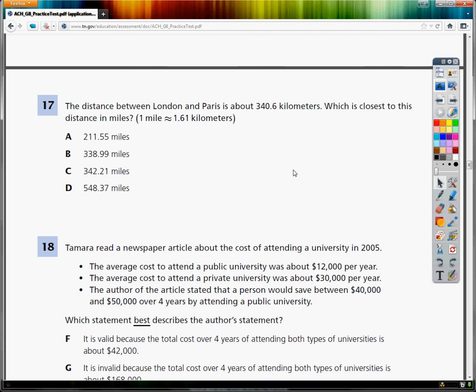This is TCAP practice test for grade eight. This says the distance between London and Paris is about 340.6 kilometers. What is the closest to this distance in miles? And they're nice enough to give us the conversion rate or the conversion factor of one mile is about 1.61 kilometers.